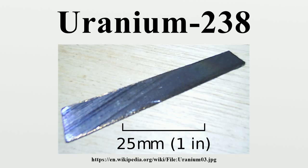Around 99.284% of natural uranium is uranium-238, which has a half-life of 1.41 times 10^17 seconds. Depleted uranium has an even higher concentration of the U-238 isotope, and even low-enriched uranium, while having a higher proportion of the uranium-235 isotope, is still mostly U-238. Reprocessed uranium is also mainly U-238,